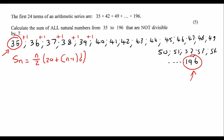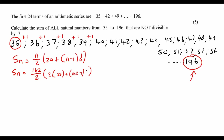So Sn equals 162 divided by 2, times 2a plus (n minus 1) times d. a is term number one, which is 35. n is 162, and the common difference in this sequence is plus one. Working this out gives us 18,711.